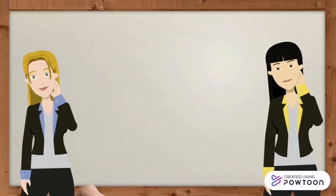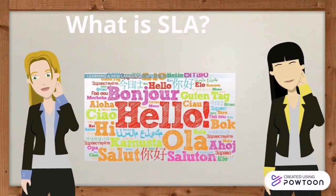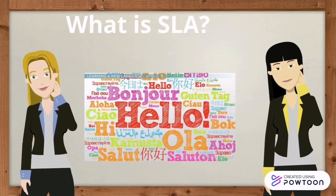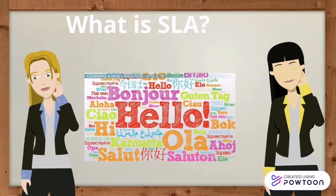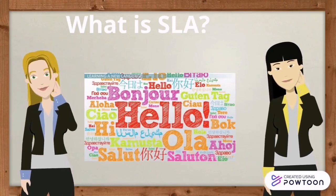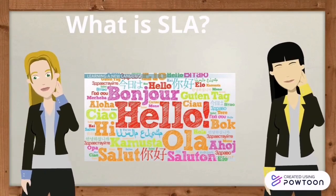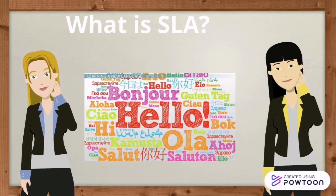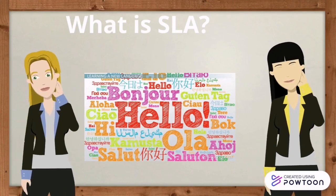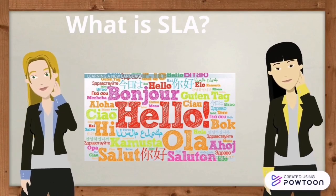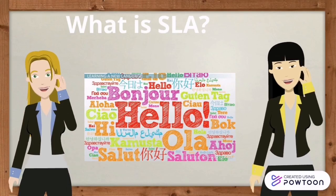What is the ACA? It is the name of the theory of the process by which we acquire a second language. This is mainly a subconscious process which happens while we focus on communication.